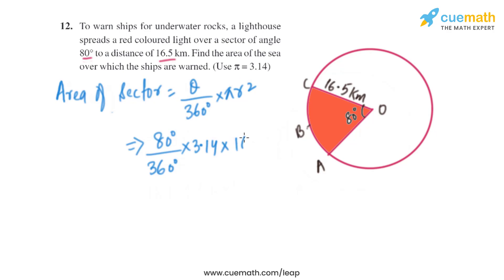On solving this, we'll get the area of the sector as 189.97 square kilometers. So that is the area of the sea over which the ships are warned.